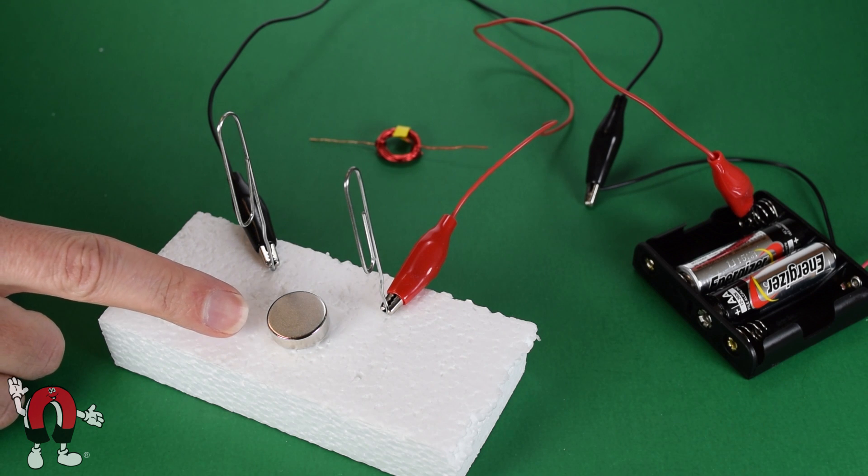This is a small neodymium magnet. It's three-quarter inch diameter by quarter inch thick.